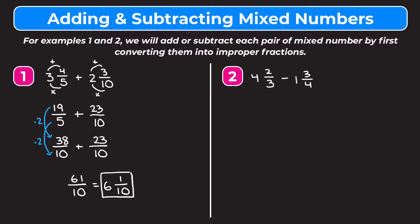Now let's take a look at example 2 which is subtraction. We're going to start by doing the same thing. So we have 4 and 2 thirds minus 1 and 3 fourths, and we want to start by changing each mixed number into an improper fraction. If we look at 4 and 2 thirds, we're going to multiply 3 by 4 which is 12, add that to our numerator of 2, so 12 plus 2 is 14. 14 is our new numerator and our denominator stays as it is. So we get 14 thirds.